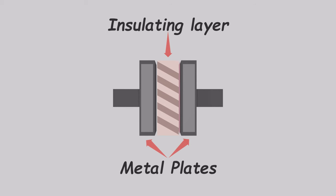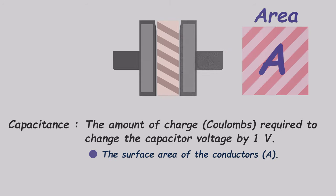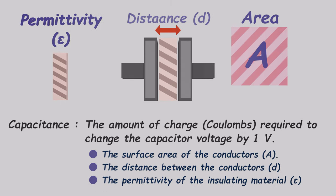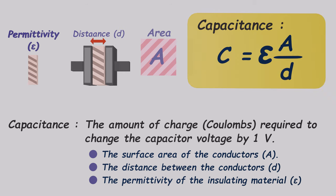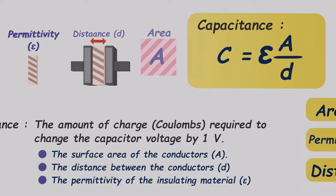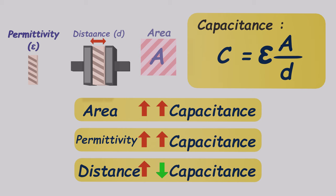Let's revisit the construction of the capacitor. It consists of two metal plates separated by an insulating material layer. The capacitor's capacitance — indicating the charge it needs to change its voltage by 1 volt — depends on three main factors: the surface area of the conductors, the distance between the conductors, and the unique permittivity of the insulating material. We can calculate the capacitance using the equation. Capacitance increases with the surface area of the conductors and the permittivity of the insulating material, while it decreases with the distance between the conductors.